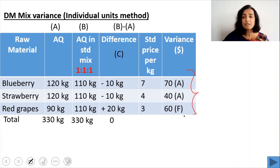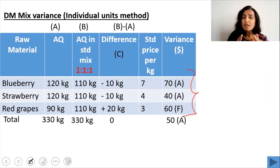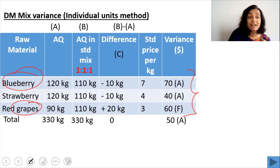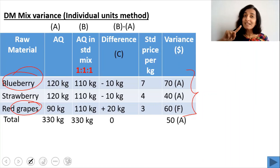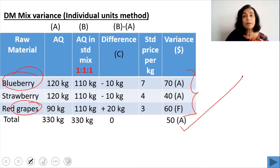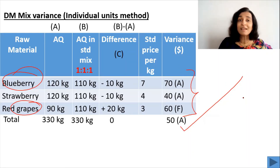Totalling the last column gives a total direct material mix variance of $50 adverse. This is adverse because we used more of the expensive blueberry and less of the cheaper red grapes — using an expensive raw material more and a cheaper raw material less results in an adverse variance. Stay tuned for the next video where I will explain how to calculate the direct material yield variance. Thank you.